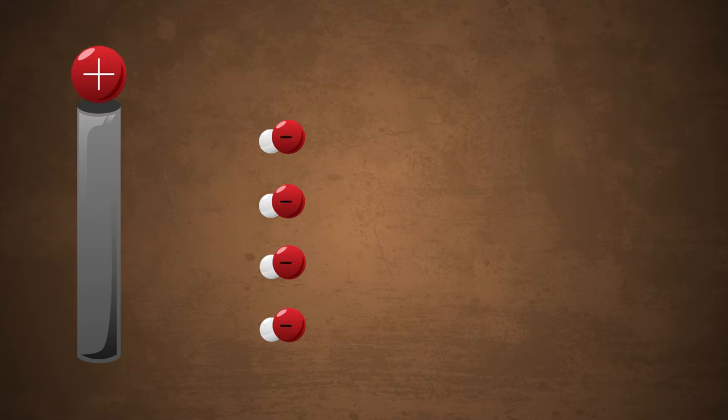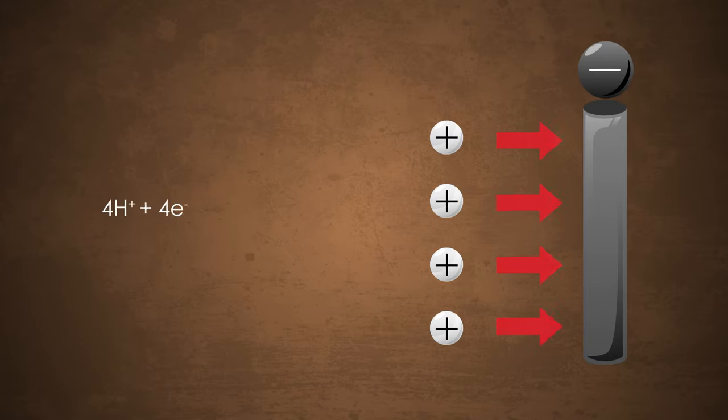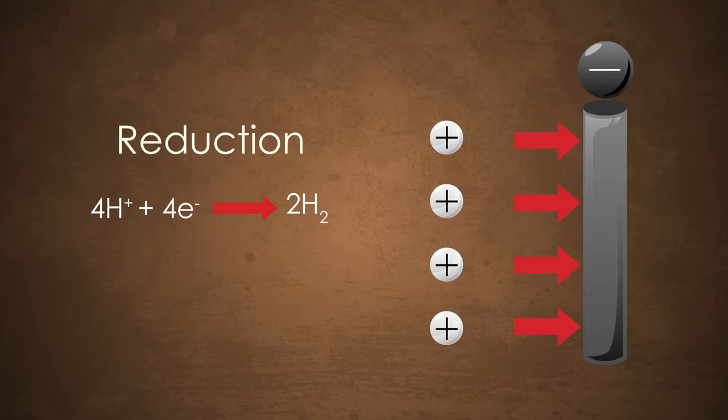At the anode we see oxygen being made. This is a loss of electrons which go into the anode and so is an oxidation reaction. At the cathode we see hydrogen being made. The electrons gained are provided by the cathode. This is a reduction reaction.